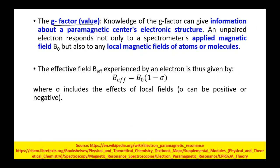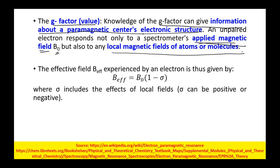Knowledge of the g-factor can give information about a paramagnetic center's electronic structure. An unpaired electron responds not only to the spectrometer's applied magnetic field B0 but also to the local magnetic fields of the molecule. Accordingly, the effective magnetic field experienced by the electron is Beff = B0 · (1 − σ), where σ is a factor that includes the effects of local states and can be either positive or negative.